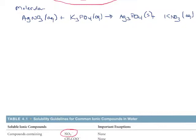We're not quite done writing the equation yet — we need to make sure it's balanced. I can see three potassiums on the reactant side but only one on the product side, so I need a coefficient of 3 on the potassium nitrate. Similarly, there are three silver atoms in Ag₃PO₄ but only one on the reactant side, so I need a coefficient of 3 on AgNO₃ as well. Everything else looks balanced, so that's the molecular equation.